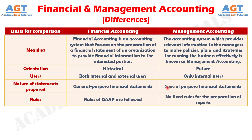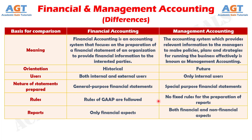Number five: For the purpose of recording, classifying, summarizing and reporting business transactions in Financial Accounting, generally accepted accounting principles are used. Conversely, in the case of Management Accounting, there is no such compulsion of using generally accepted accounting principles. Number six: Financial Accounting reports only financial aspects, whereas Management Accounting reports both financial and non-financial aspects.